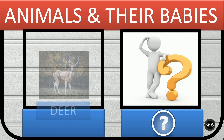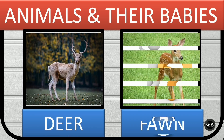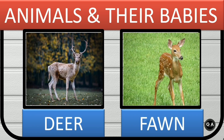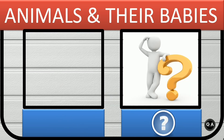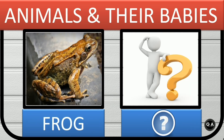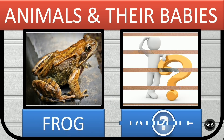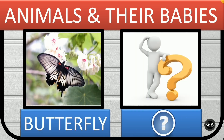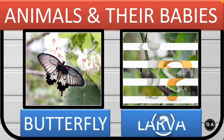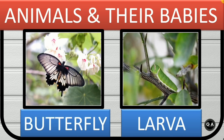Deer. Deer's baby is fawn. Frog. Frog's baby is tadpole. Butterfly. Butterfly's baby is larva.